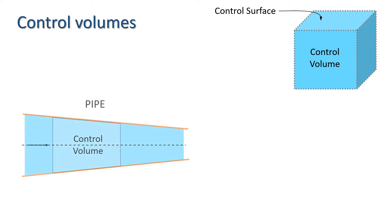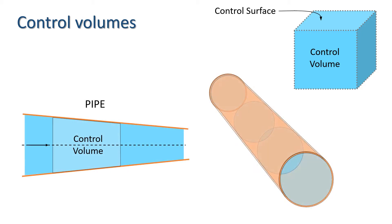A pipe provides us with one example where the choice of control volume is obvious. The inner surface of the pipe is taken as one of the boundaries, and the other two are plane surfaces perpendicular to the flow — one through which the fluid flows in and the other through which it flows out.